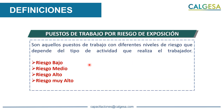Otra definición importante para desarrollar correctamente el plan de vigilancia es la de los puestos de trabajo por riesgo de exposición. La norma dice que son aquellos puestos de trabajo con diferentes niveles de riesgo que dependen del tipo de actividad que realice el trabajador, definidos en cuatro niveles: riesgo bajo, riesgo medio, riesgo alto y riesgo muy alto. Aquí hay una gran confusión: muchas personas incluyen los factores de riesgo personal de los trabajadores, pero esto no importa para establecer el nivel de riesgo de exposición por puesto de trabajo.